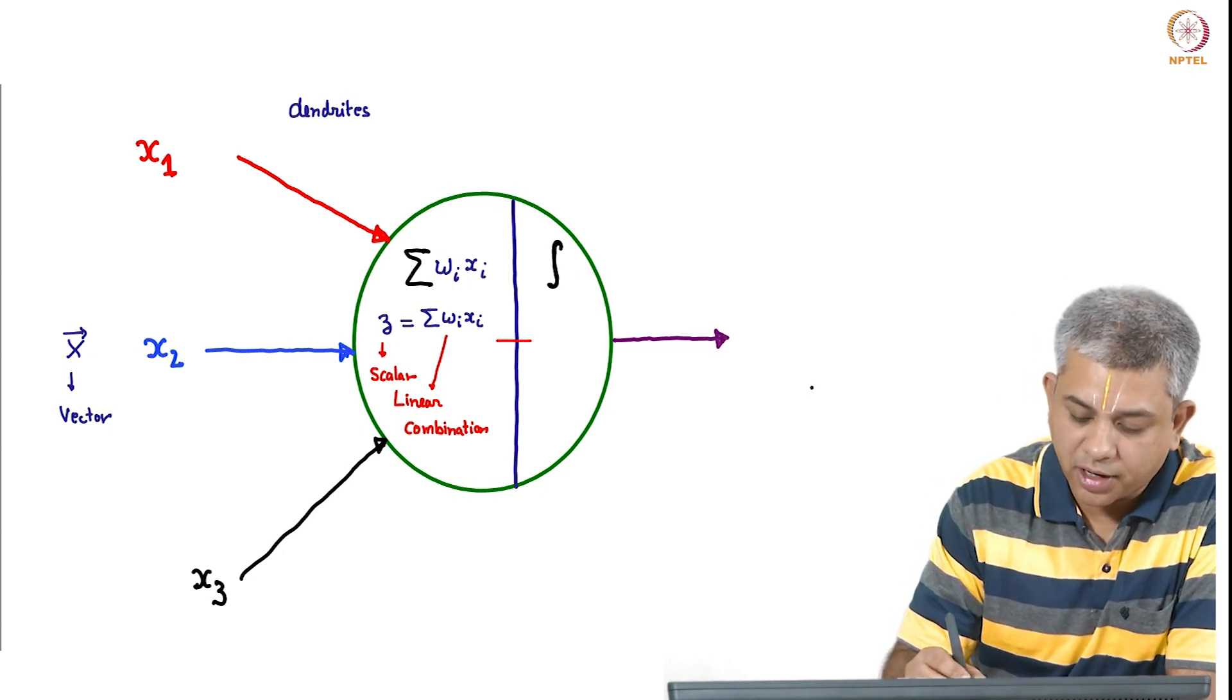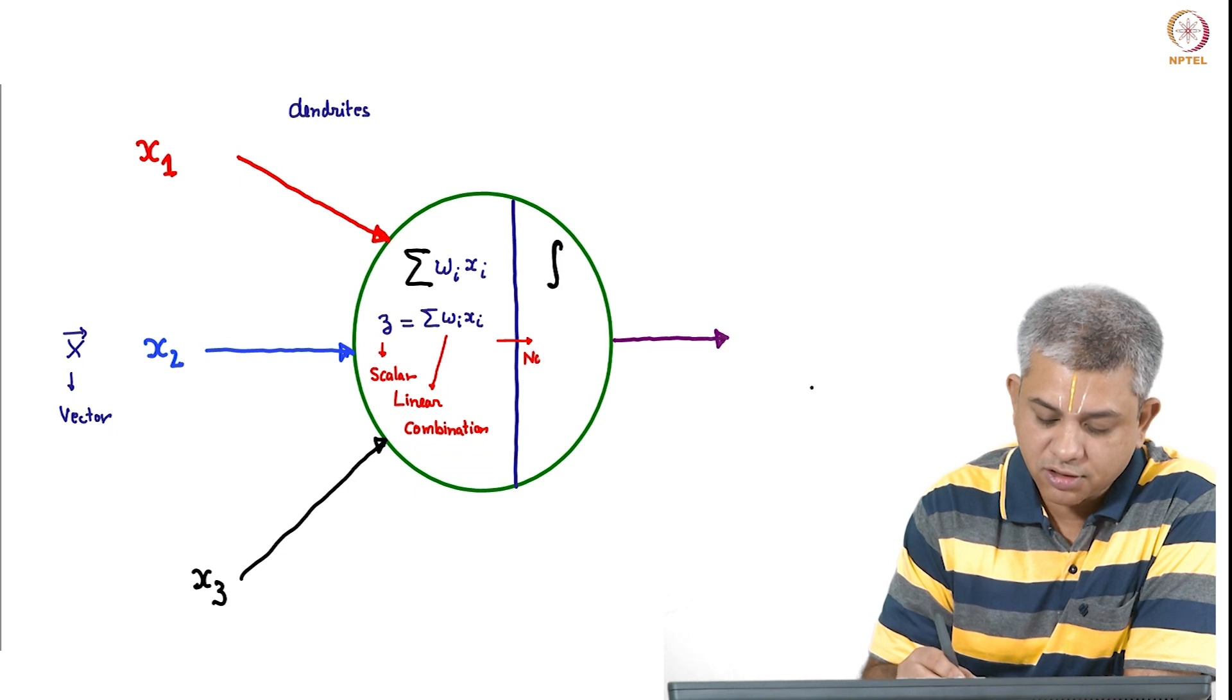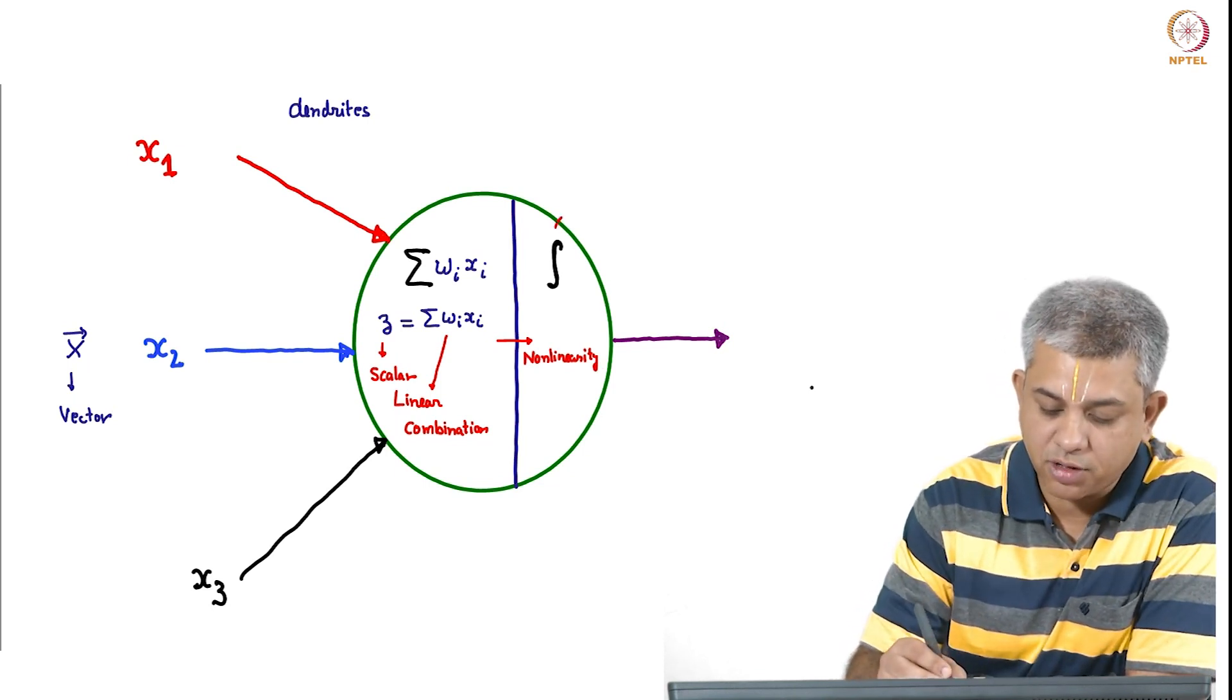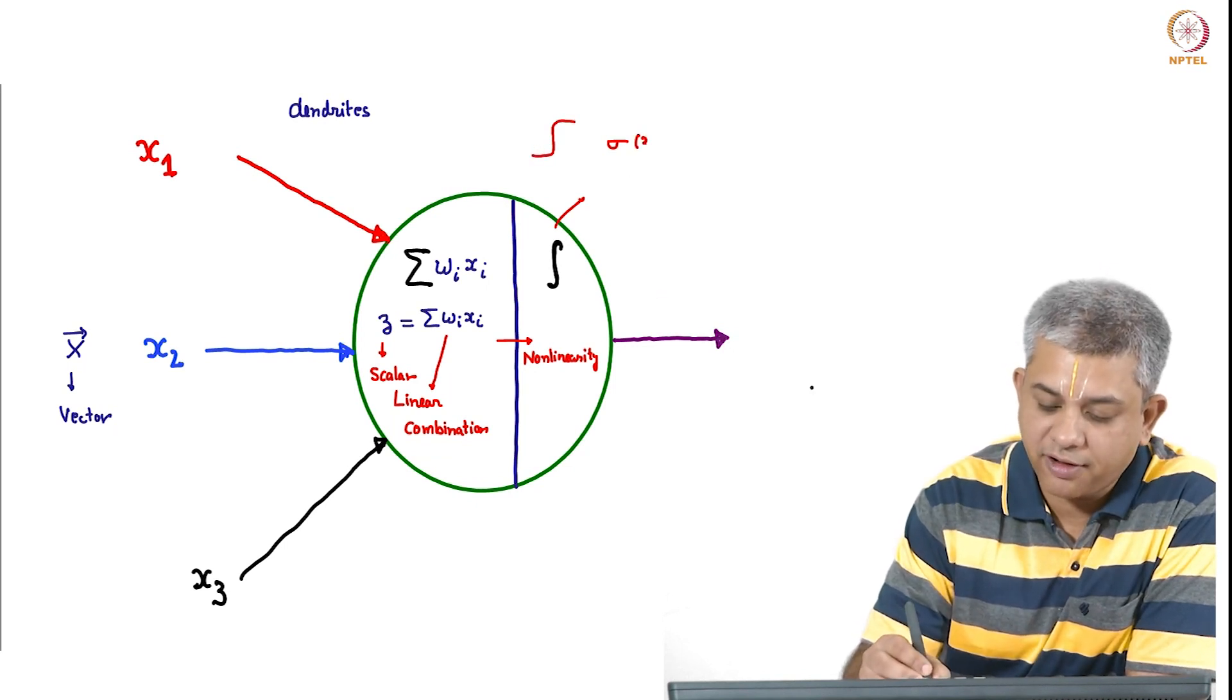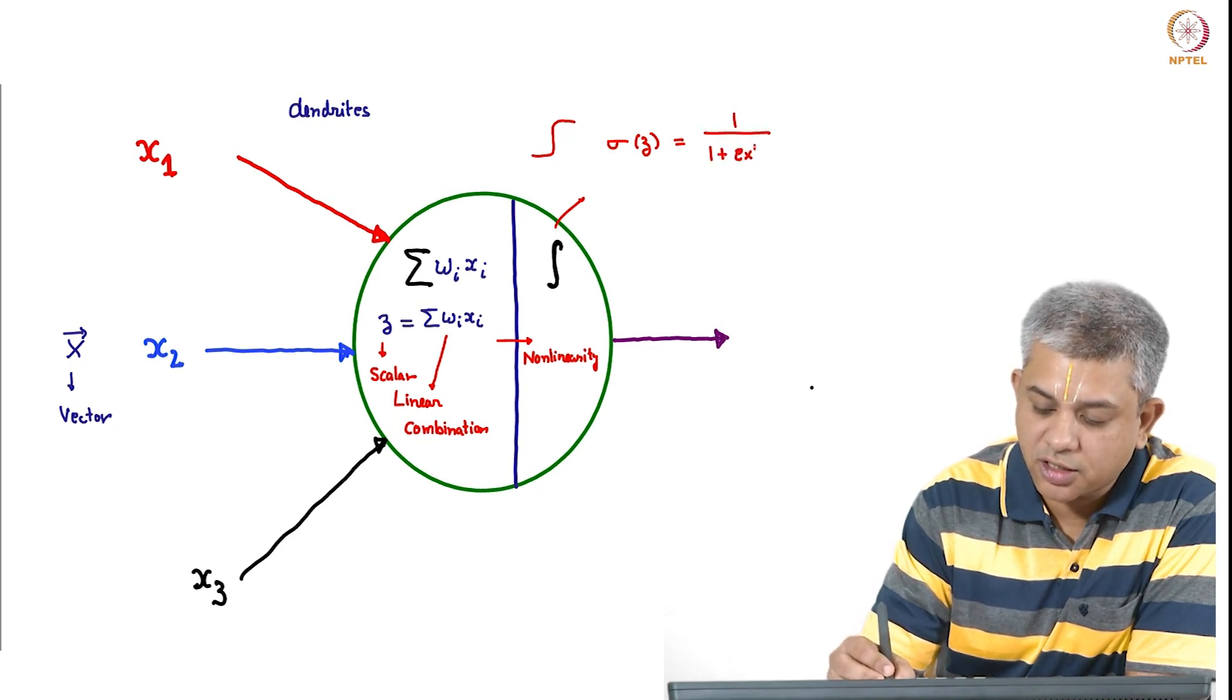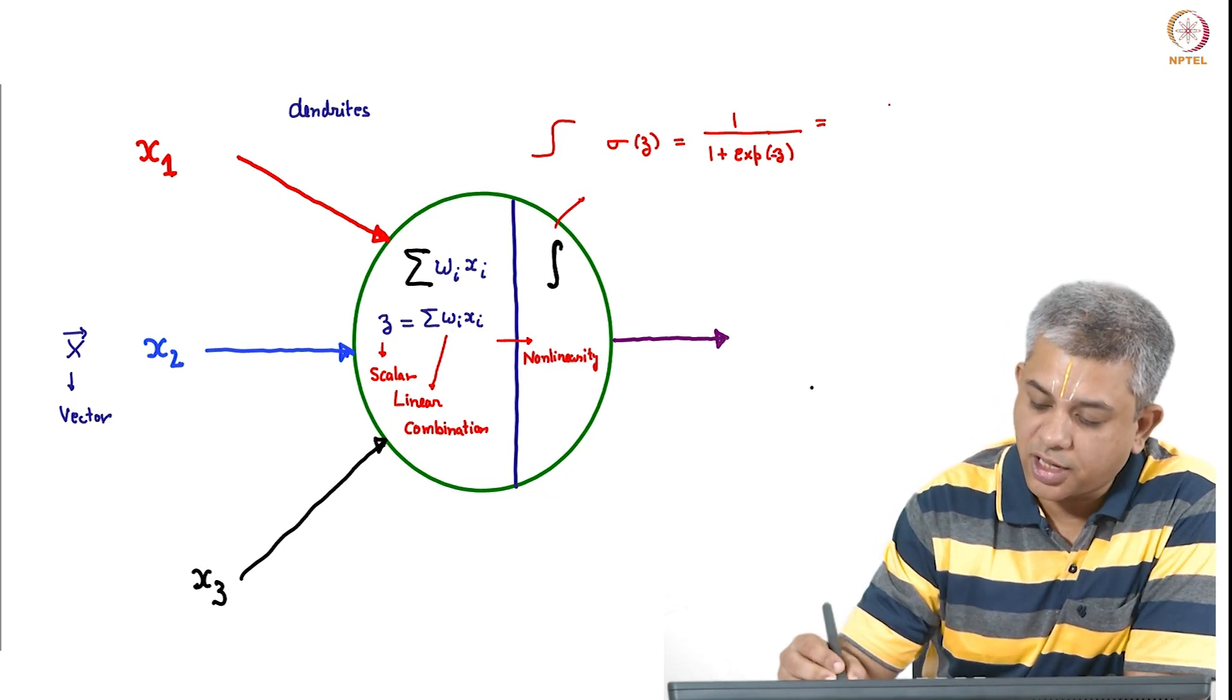Now this z goes into the next part which is the nonlinearity, and what makes neural networks work really is this nonlinearity. One simple nonlinear function which we have already seen, for example, is the sigmoid function. Graphically we denote it by the shape of the sigmoid curve. So sigmoid of z would be 1 by 1 plus exponential minus z.